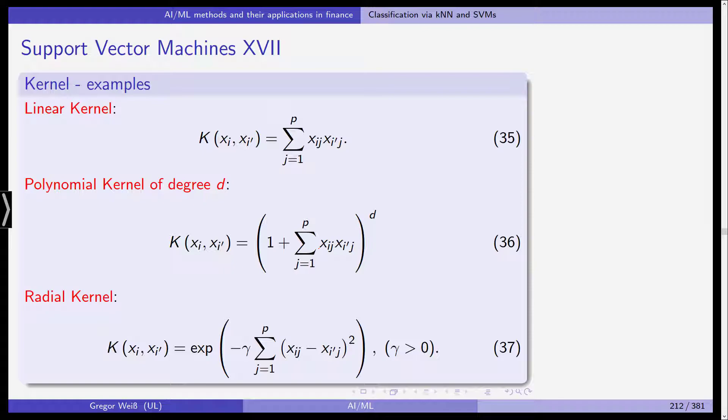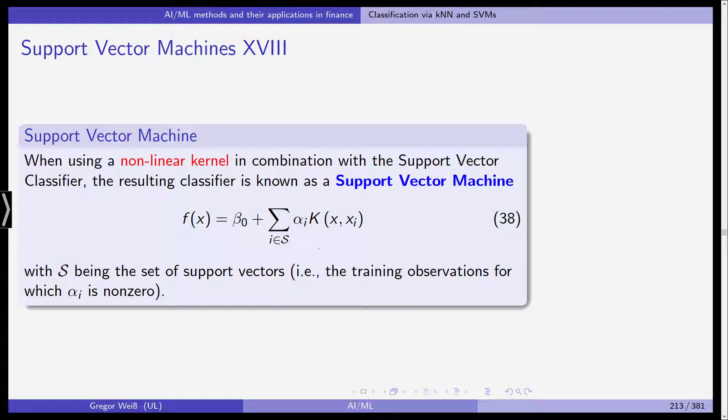And this is what finally is a support vector machine. We can use different kernels. For example, we can use the linear kernel. We can also use a polynomial kernel of degree d, or quite often use the so-called radial basis function kernel, which is given in equation 37. So, these are different choices for comparing xi and xi' to vectors. And if we now substitute the linear kernel by, say, the radial kernel, we get a different classifier. And if we substitute the linear one with a nonlinear kernel, the resulting classifier is known as a support vector machine, or SVM.